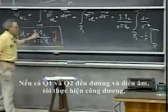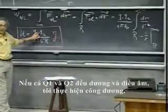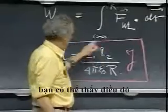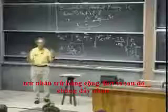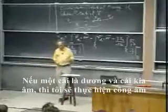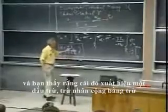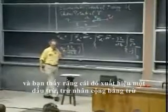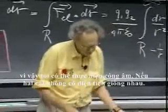If q one and q two are both positive, or both negative, I do positive work. You can see that. Minus times minus is plus. Because then they repel each other. If one is positive and the other is negative, then I do negative work. And you see that that comes out as a sign sensitive. Minus times plus is minus. So I can do negative work if the two don't have the same polarity.